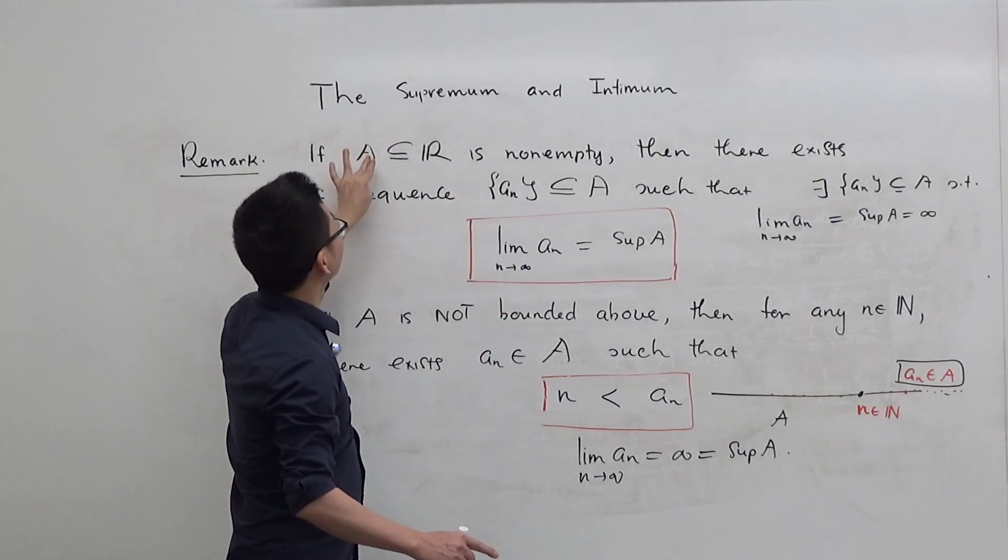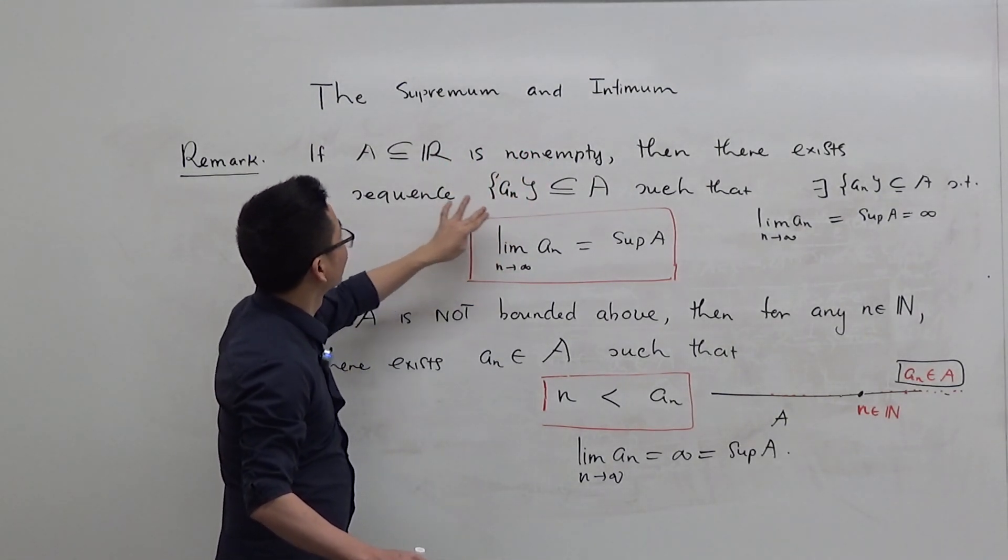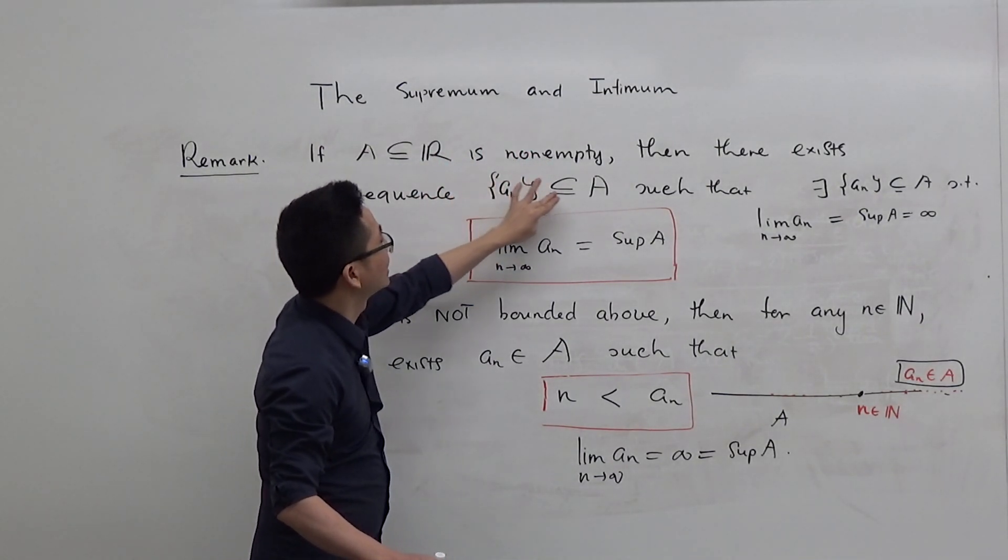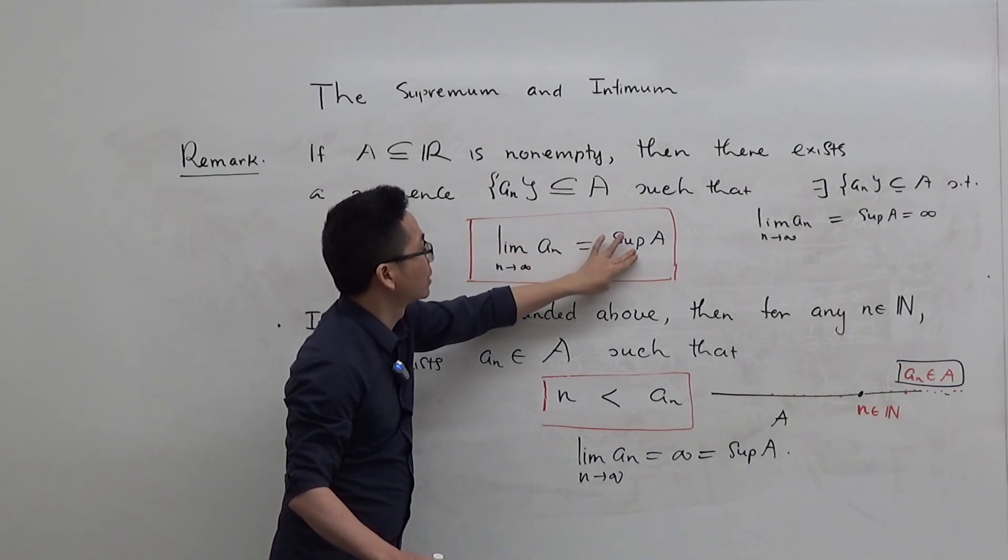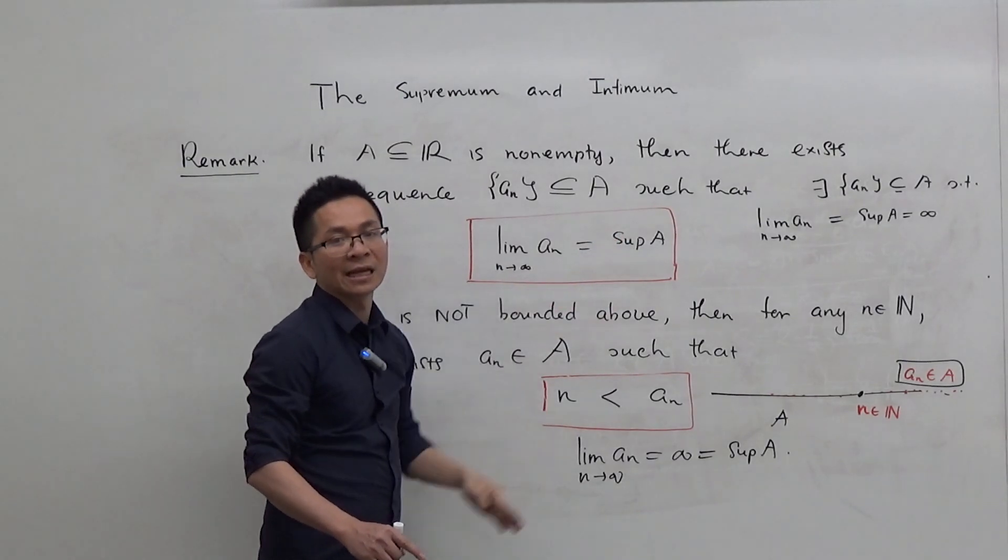So, in general, if A is a non-empty set of the real line, you can always find a sequence A_n in A such that lim of A_n as n approaches infinity equals the supremum of the set A.